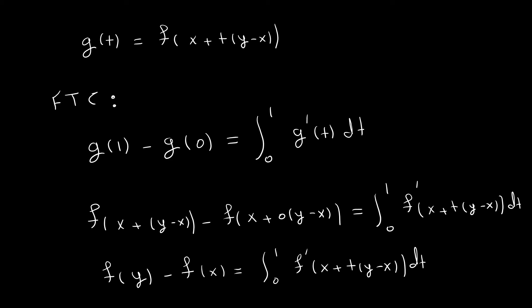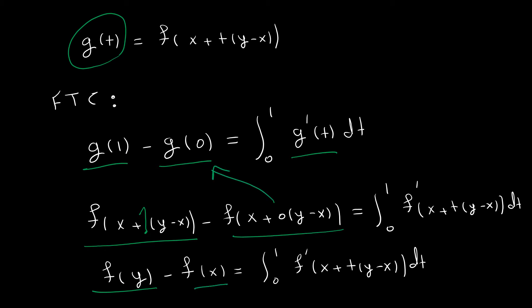We apply the fundamental theorem of calculus to g as our scalar-valued function. So we have g(1) minus g(0) equals the integral of g'(t). Setting t=1 gives g(1) = f(y), and setting t=0 gives g(0) = f(x). For g'(t), I get f' evaluated at x plus t times (y minus x). I need to take the derivative of a function whose argument is a vector, which requires additional steps since vectors are involved.